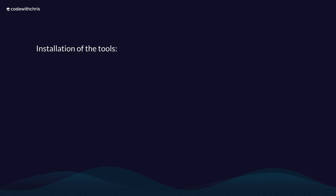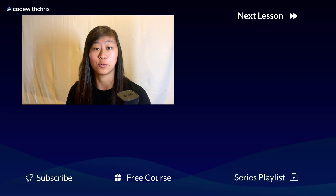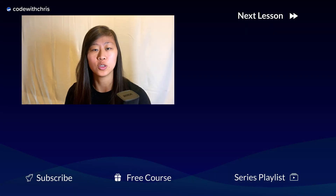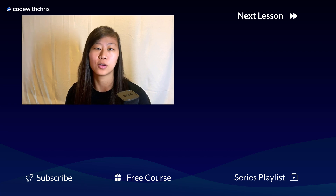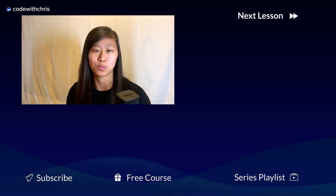That is the end of this lesson. We installed all the tools we'll need for creating our Vapor API with our iOS app: Homebrew as a package manager for macOS, Vapor, Postman, and Azure Data Studio. We created a project and ran it for the first time, and used Postman to hit the default route and the hello route. This is the first video I've ever recorded on YouTube, so let me know how I did in the comments and if you have any suggestions. I will see you in the next part.